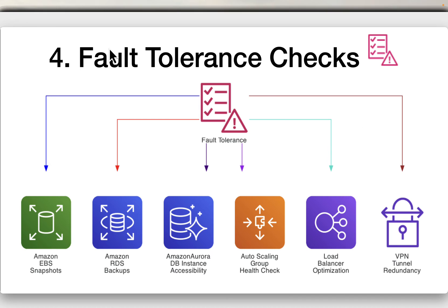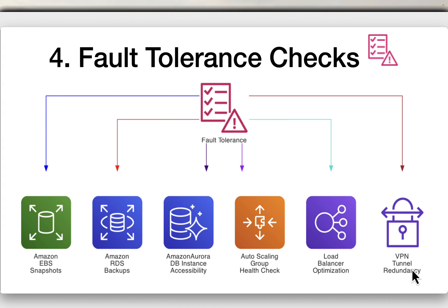Under fault tolerance, checks include Amazon EBS snapshots — whether you are taking them — Amazon RDS backups, Amazon Aurora DB instance accessibility, auto scaling group health checks, load balancer optimization, and VPN tunnel redundancy. Through all these mechanisms you can increase the fault tolerance of your applications.